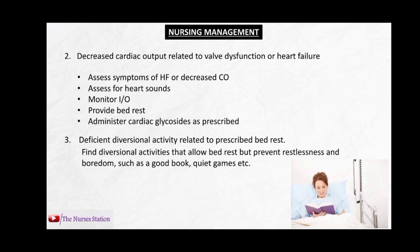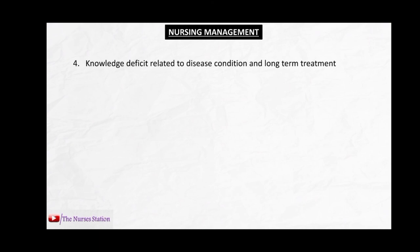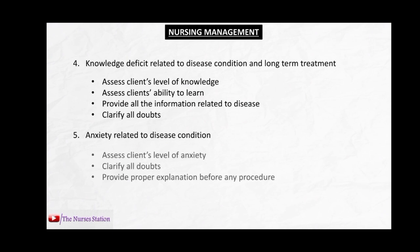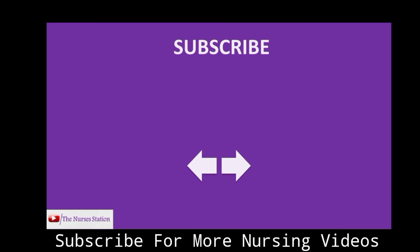Third, deficient diversional activity related to prescribed bed rest — find activities that allow bed rest while preventing restlessness and boredom, such as reading or playing quiet games. Fourth, knowledge deficit related to disease condition and long-term treatment — assess the client's level of knowledge and ability to learn, provide information about the disease, treatment, and procedures, and clarify all doubts. Fifth, anxiety related to disease condition — assess the patient's level of anxiety, clarify doubts, and provide proper explanations before any procedure or treatment, because unknown situations aggravate anxiety while known situations relieve it.